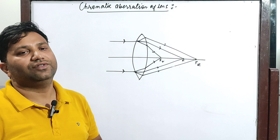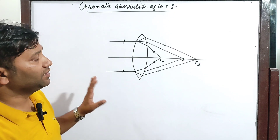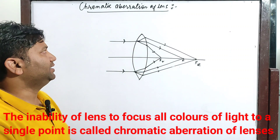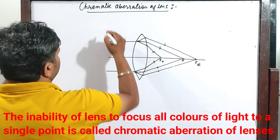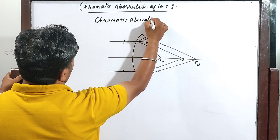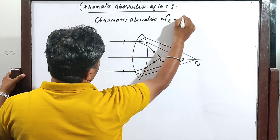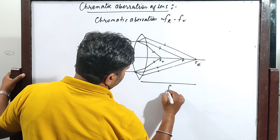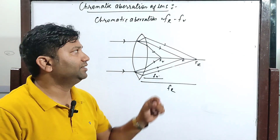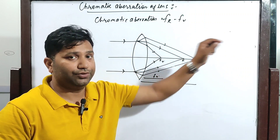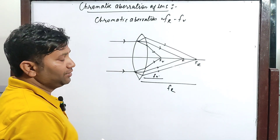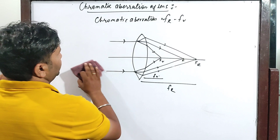What is chromatic aberration of lenses? The inability of a lens to focus all the colors of light to a single point is known as chromatic aberration of lenses. It is measured as f_r minus f_v, where f_r is the focal length for red color and f_v is the focal length for violet color. If the lens is free of chromatic aberration, then the value of f_r minus f_v will be equal to zero. Now we will be discussing the expression for chromatic aberration.